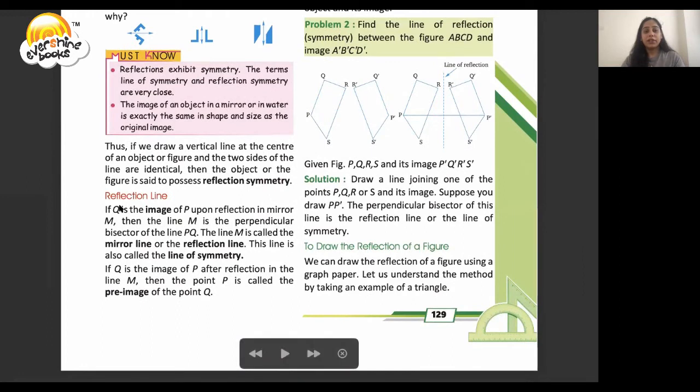Now what is reflection line? If Q is the image of P upon reflection in the mirror M, then the line M is the perpendicular bisector of PQ. The line M is called the mirror line or the reflection line.